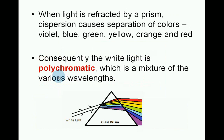When light is refracted by a prism, dispersion causes separation of colours: violet, blue, green, yellow, orange and red. Consequently, white light is polychromatic, which is a mixture of the various wavelengths.